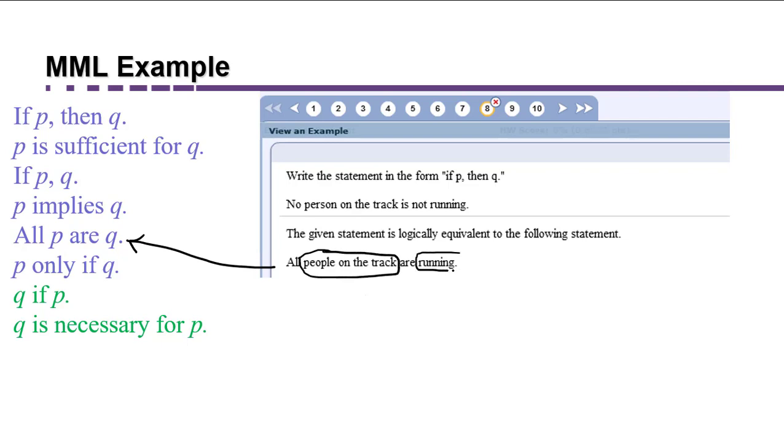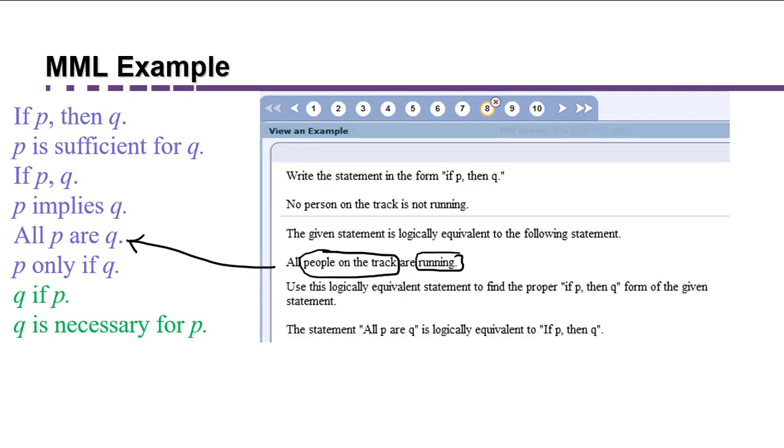So now I just have to figure out what these conditions P and Q are. P appears to be people being on the track. Q appears to have to do with people running. So if I want to change this to if then form I'm going to say something like if a person is on the track then that person is running.